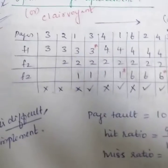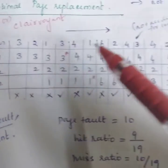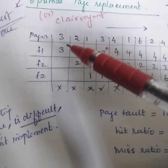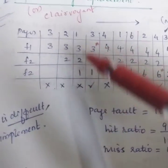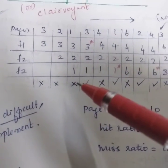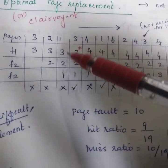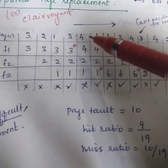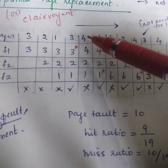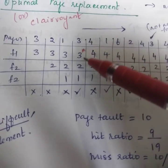Now let's see this example: three page frames F1, F2, F3 and this is the reference string given. First three are occupying the empty slots. Now consider this three - three is already here so no need to replace anything, so it's a hit. Then next string 4, now we need to accommodate this four.